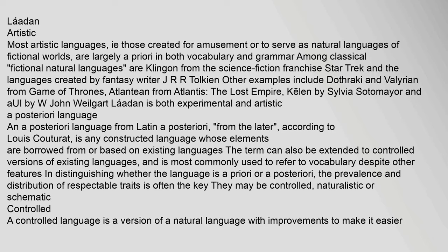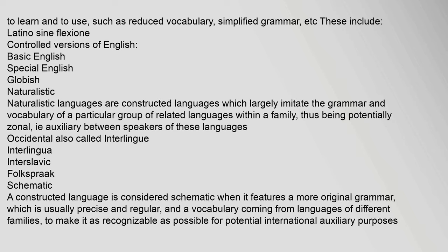A controlled language is a version of a natural language with improvements to make it easier to learn and use, such as reduced vocabulary and simplified grammar. These include Latino sine flexione and controlled versions of English like Basic English, Special English, and Globish. Naturalistic languages are constructed languages that largely imitate the grammar and vocabulary of a group of related languages within a family, such as Occidental, Interlingua, and Interslavic. A schematic constructed language features more original, precise, and regular grammar with vocabulary drawn from languages of different families for international auxiliary purposes.